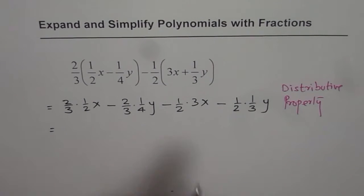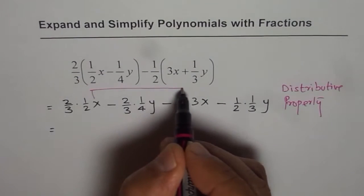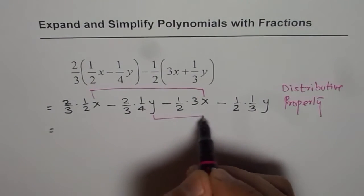Now we need to combine the like terms. Like terms are the terms with similar variable parts, which is x and these are the y terms.